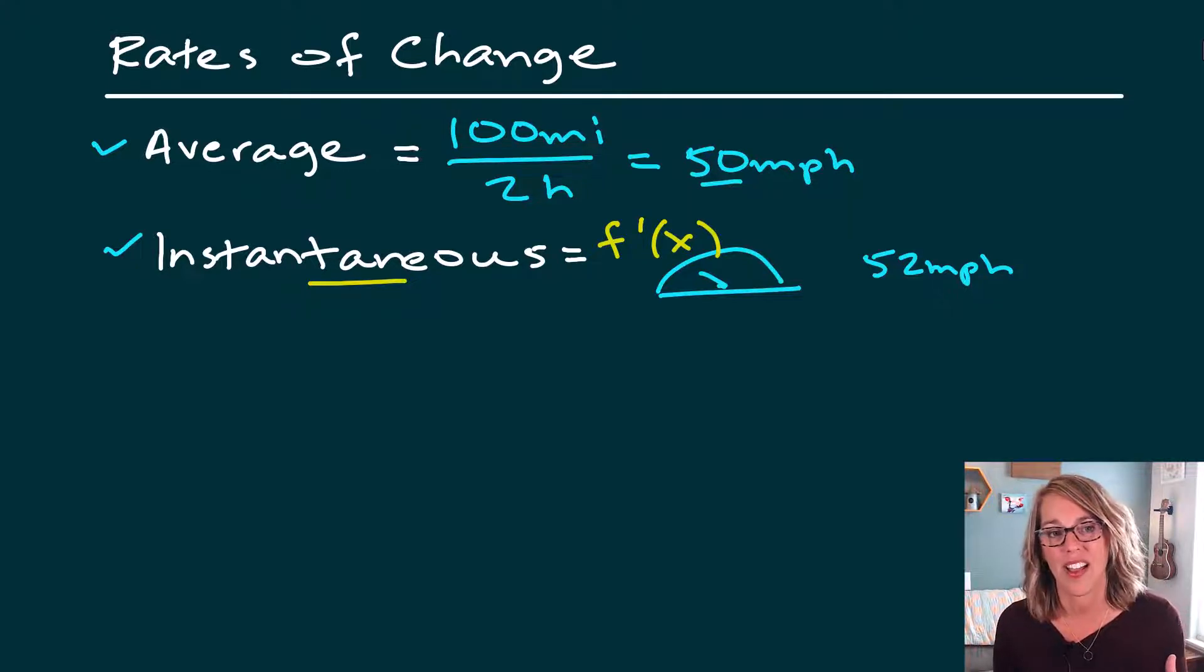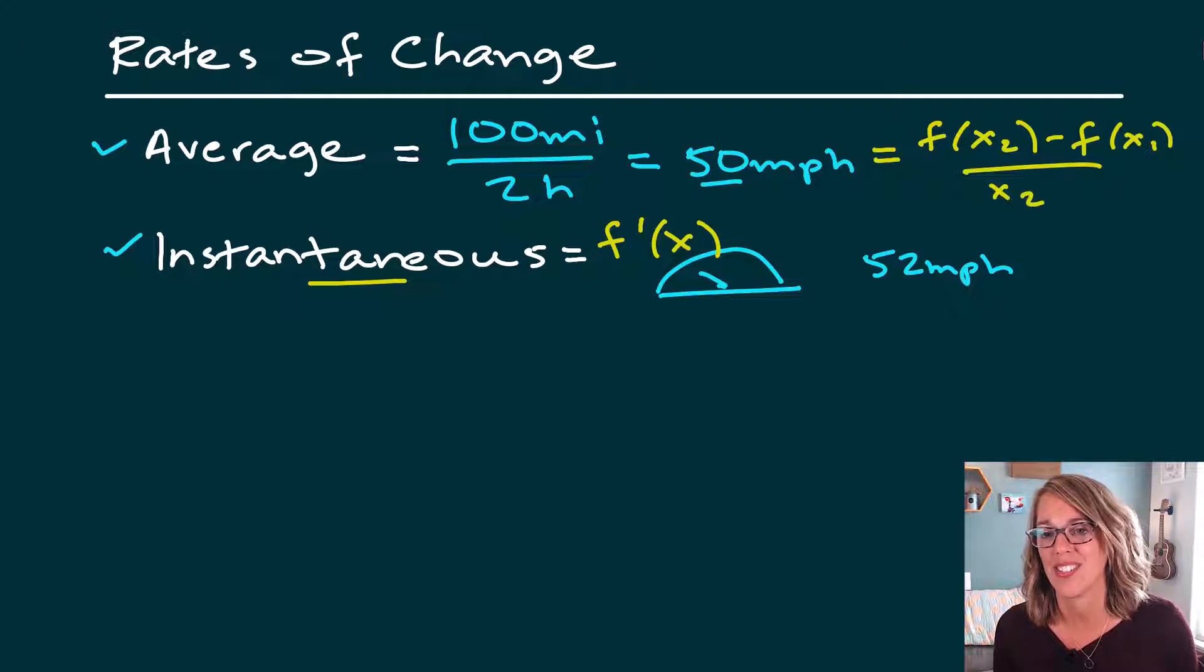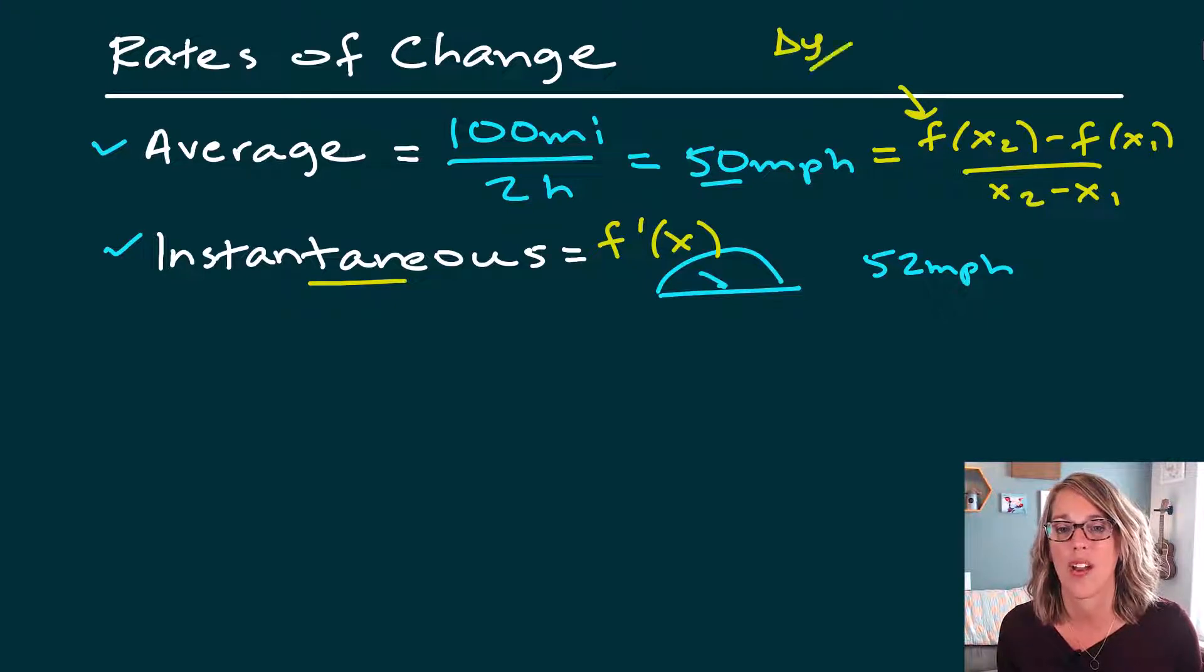If I wanted to find an average, it would be a lot like finding a slope. So this would be the change in f over the change in x, or we could say f of x2 minus f of x1 divided by x2 minus x1. Hopefully this looks like just your good old slope formula, the change in y over the change in x.